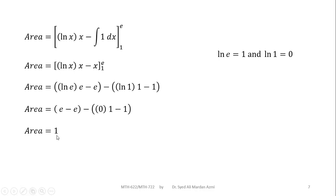Then 0 multiplied by 1 is 0, and the minus 1 with the preceding minus sign becomes plus 1, which is the required answer for the area. Thank you so much for watching this video. Please like, subscribe, and recommend this video to your peers if it is helpful for you. Allah Hafiz.